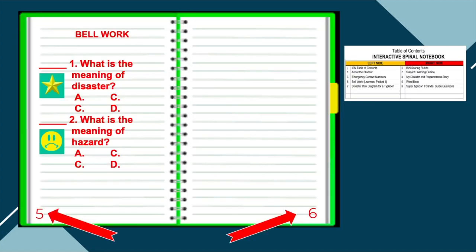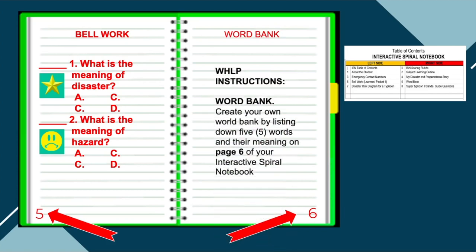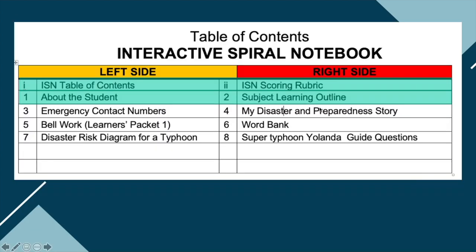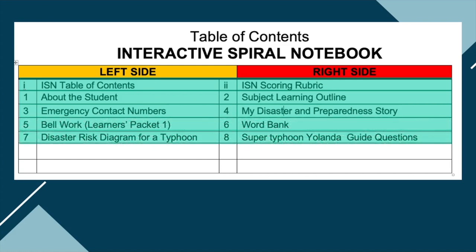Now we proceed with the word bank. On page number six, I require you to have your word bank. My instruction is: create your own word bank by listing down five words and their meanings on page number six of your ISN. This instruction can be seen in the WHLP. Go to the table of contents, find page six of your notebook, which is on the right side, and place the five words and their meanings there. Here is an example of a word bank.